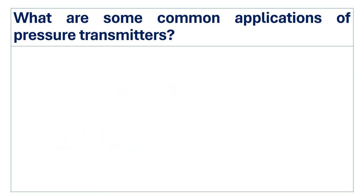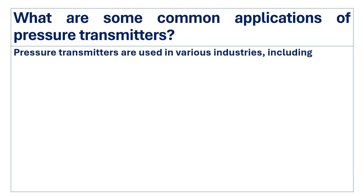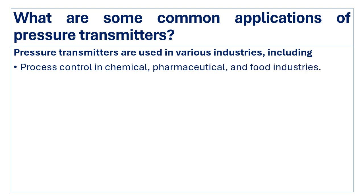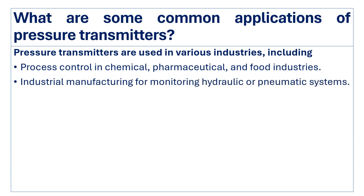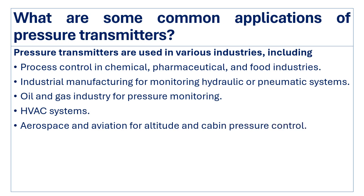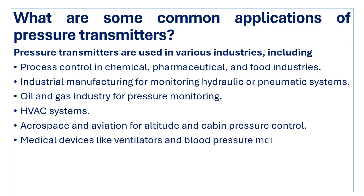What are some common applications of pressure transmitters? Pressure transmitters are used in various industries including process control in chemical, pharmaceutical, and food industries; industrial manufacturing for monitoring hydraulic or pneumatic systems; oil and gas industries for pressure monitoring; HVAC systems for measuring air or refrigerant pressure; aerospace and aviation for altitude and cabin pressure control; and medical devices like ventilators and blood pressure monitors.